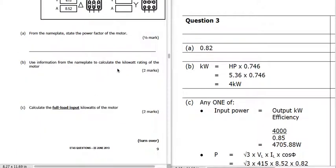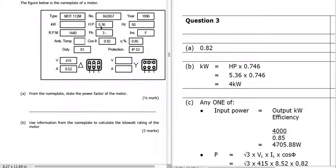Use the information from the nameplate to calculate the kilowatt rating of the motor. It's an old-style motor with HP — horsepower — of 5.36. The kilowatts is going to be the horsepower times 0.746. This 0.746 is a fixed conversion value from horsepower to kilowatts, and that gives us 4 kilowatts.